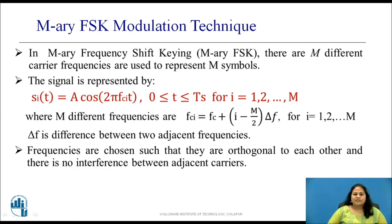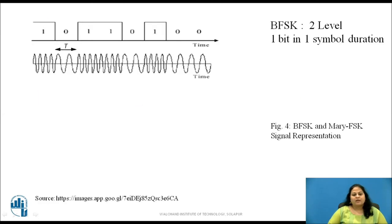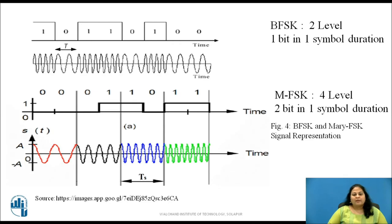Let us now see M-Ary FSK modulation technique. In M-Ary FSK, M different carrier frequencies are used to represent M symbols. This signal is represented by Si(t) equals 2cos(2πfci·t) during one symbol duration, for i equal to 1 to M. These frequencies are chosen so that they are orthogonal to each other, and thus there is no interference between adjacent carrier frequencies. The figure shows the BFSK signal representation, where symbols 1 and 0 are represented by two different carrier frequencies. In M-Ary FSK for M equal to 4, two bits are grouped and four symbols are represented by four different carrier frequencies.